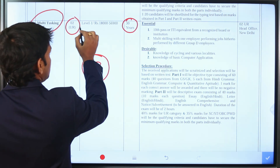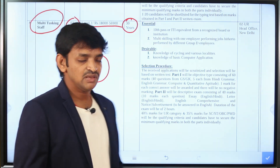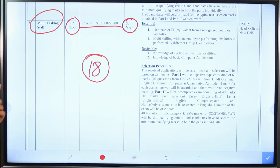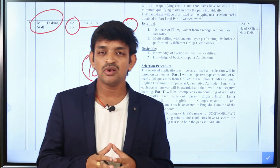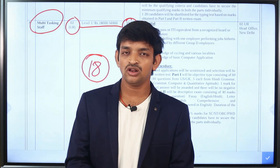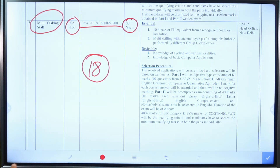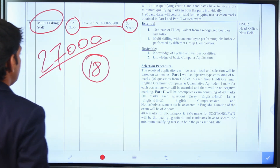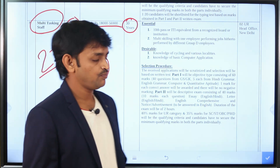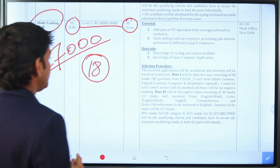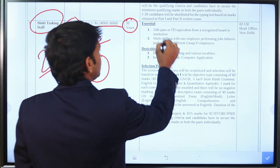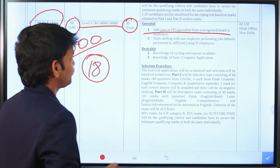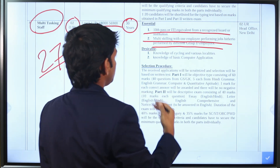For the salary, the MTS post is at Level 1. The basic pay is ₹18,000. With all allowances and elevations, the total salary of the job comes to approximately ₹27,000. This is how the multi-tasking staff compensation is structured.